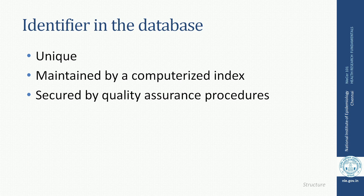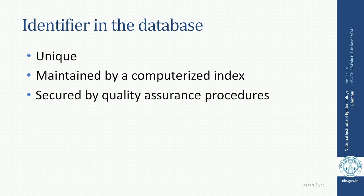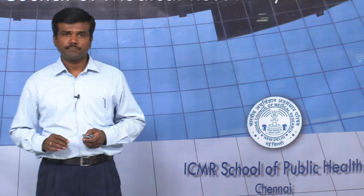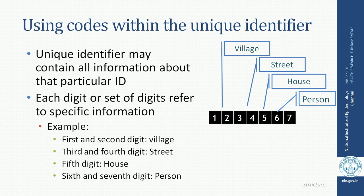Let us look at the first of the important elements in a database. This is called the identifier. This identifier has to be unique, and that is why it is called a unique identifier. It is maintained by a computerized index, and this particular unique identifier has to be secured by a quality assurance procedure that guarantees that each piece of data has its own internal validity. The code can comprise information about that particular individual — for example, it can have 7 digits, each of which refers to specific identifier information about the individual about whom the data was collected.